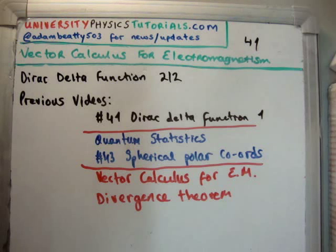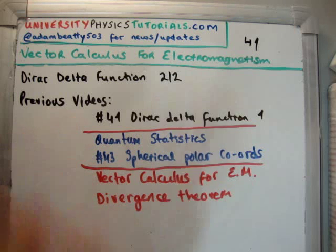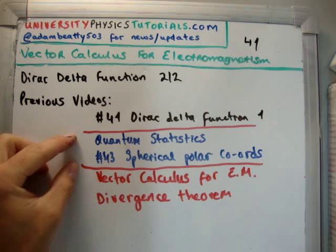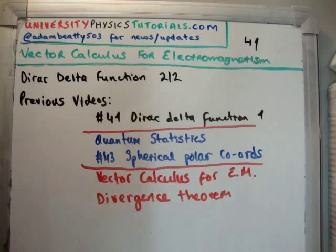There are a number of videos which are previous to this and are relevant. At number 41, I discussed the Dirac delta function part 1. In my videos on quantum statistics, I discussed spherical polar coordinates on video number 43. And in my videos for vector calculus for electromagnetism, I also discussed the divergence theorem.